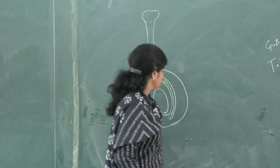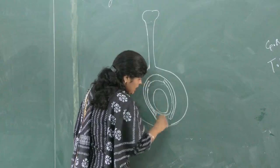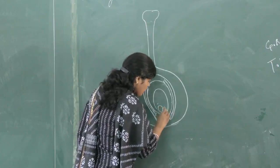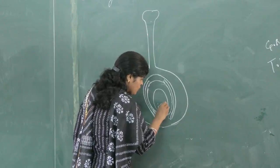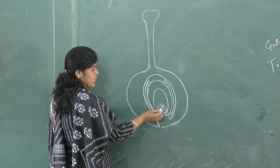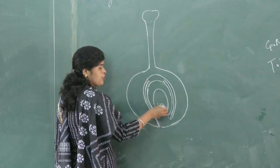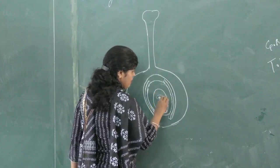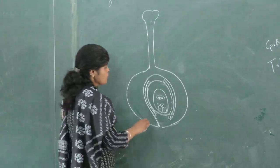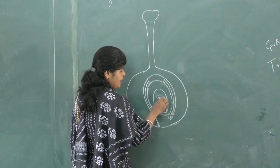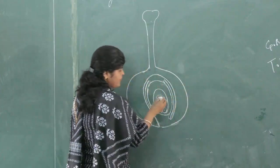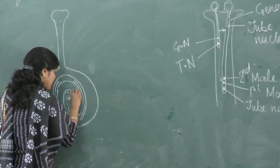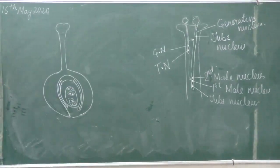This opening is known as the micropyle — it remains even after fertilization. Towards the micropyle end there are two large cells known as synergids, and between the synergids there is present an egg cell. In the center there is a central cell with two nuclei called polar nuclei. Opposite to the synergids there are three nutritive cells known as antipodal cells.